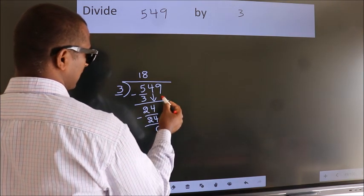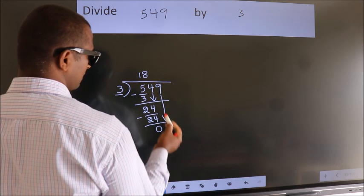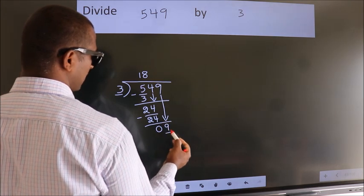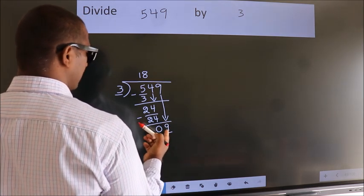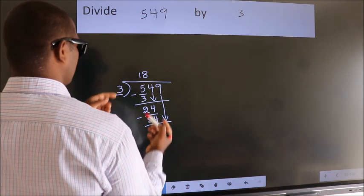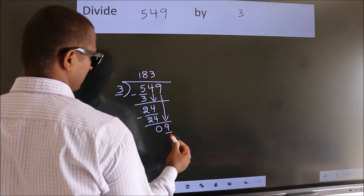After this, bring down the beside number, so 9 down, so 9. When do we get 9? In the 3 table, 3 3s, 9.